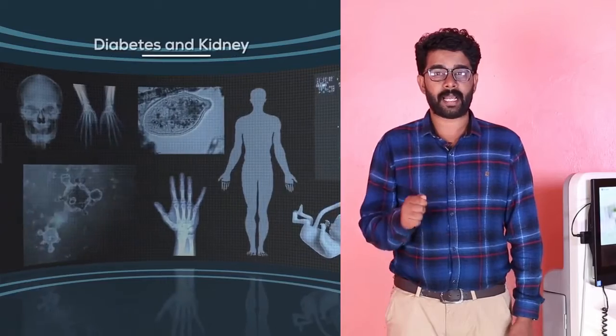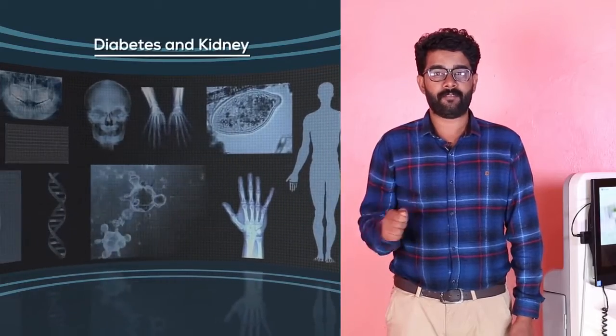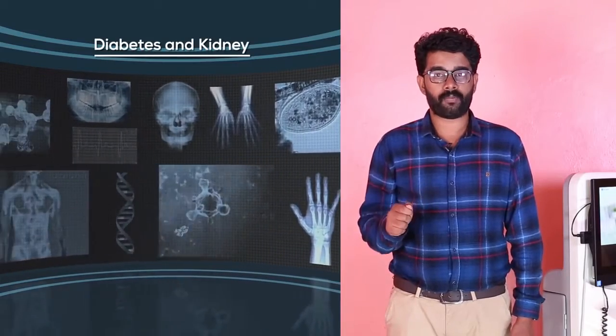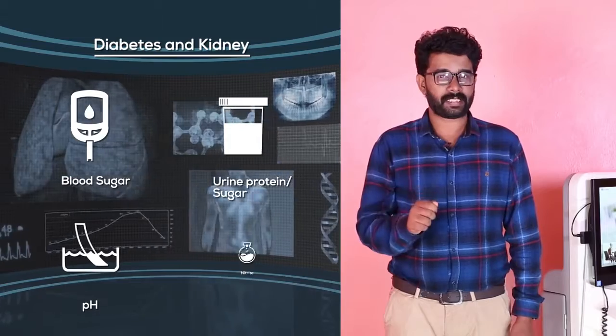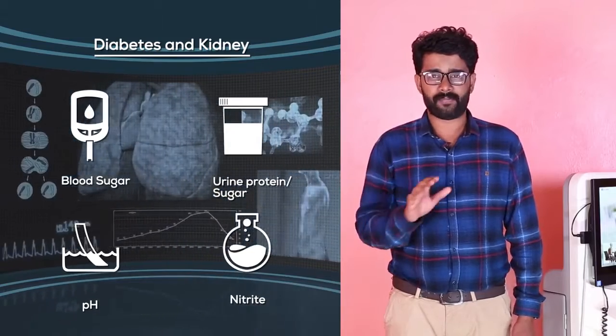The fourth is Diabetes and Kidney, where you can check the report of Blood Sugar, Urine Protein, Urine Sugar, pH, and Nitrate.